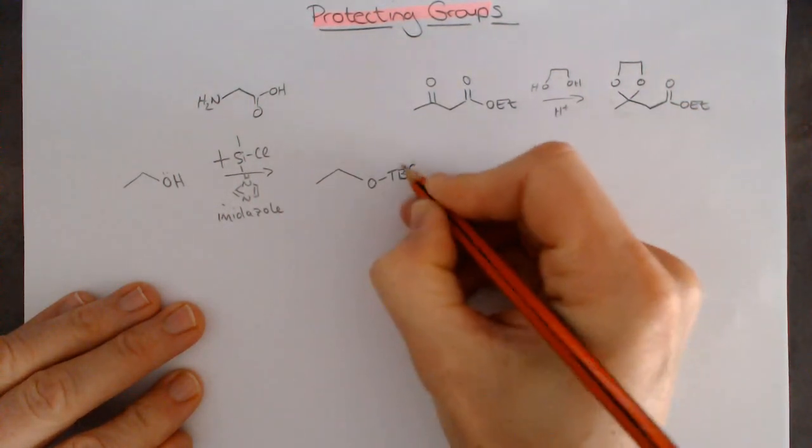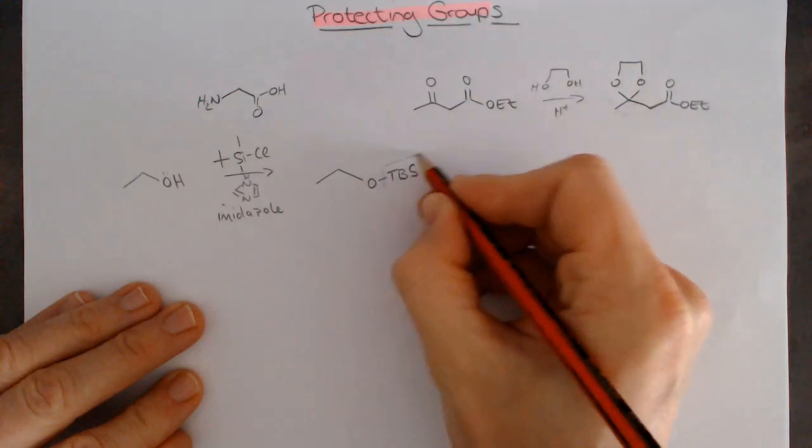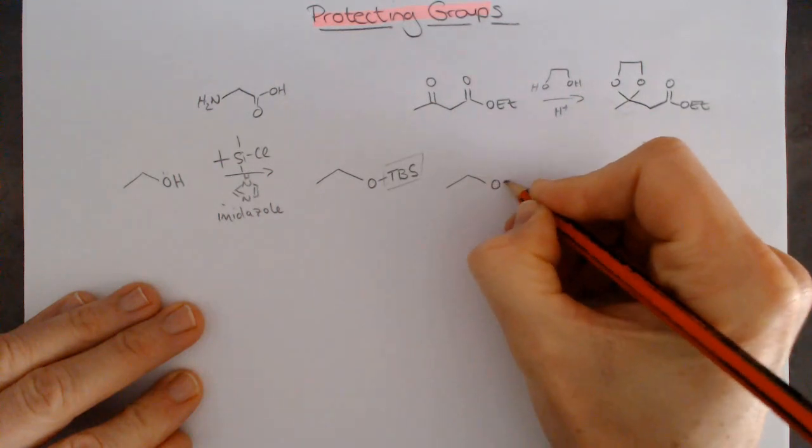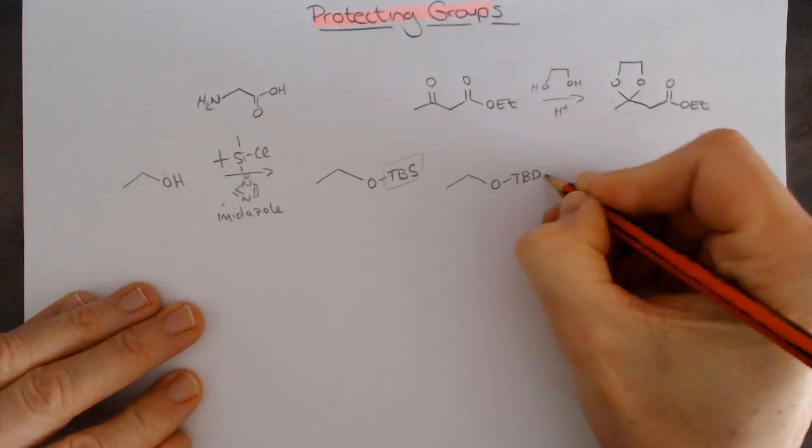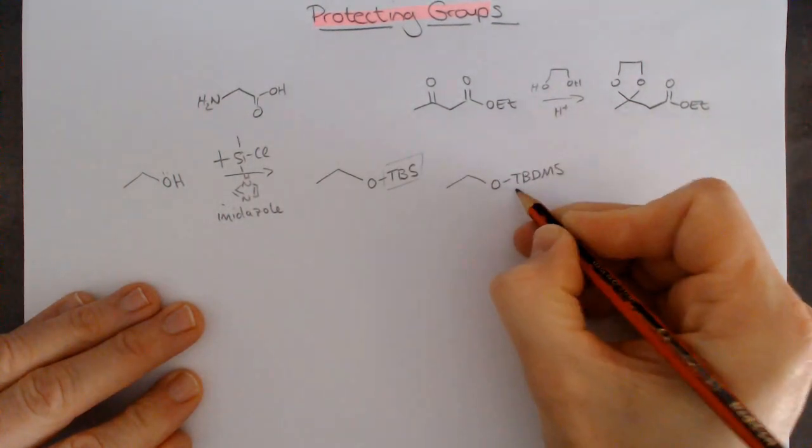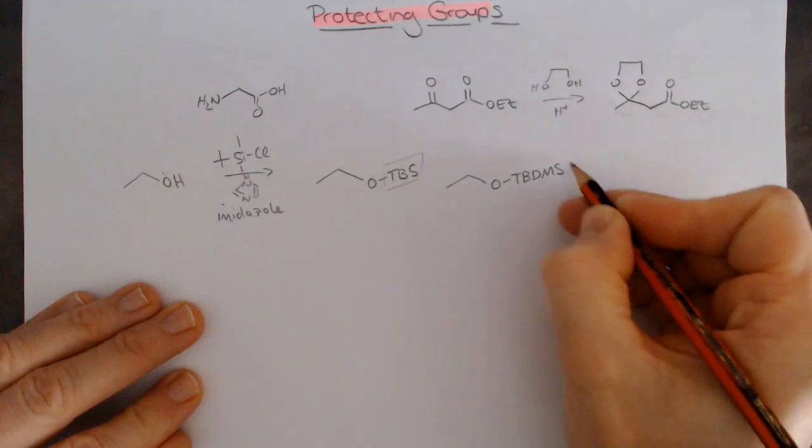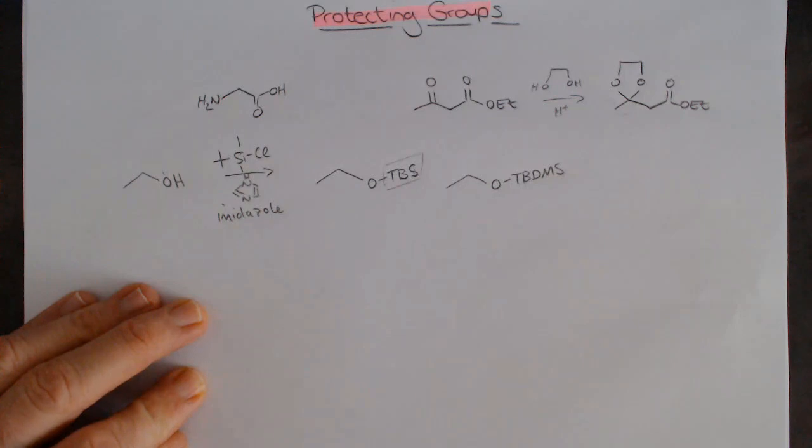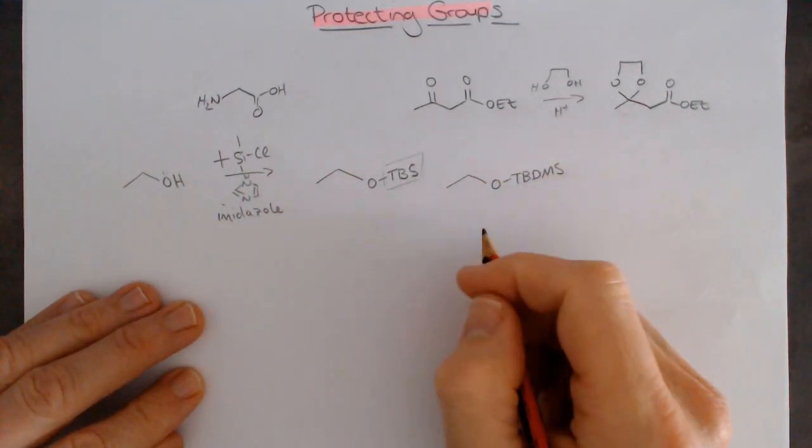This has a couple of shortenings. TBS is a very common shortening that you see, but sometimes it's written as TBDMS because it's tertiary butyl dimethyl silyl. So this is the more formal long version. The TBS you see a lot as well. It's important to recognize that these two things mean exactly the same thing.